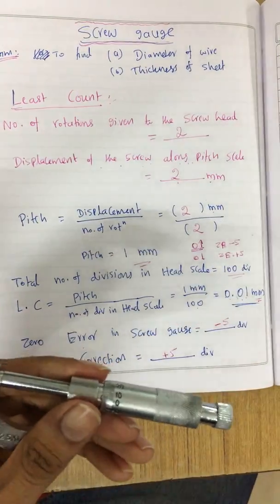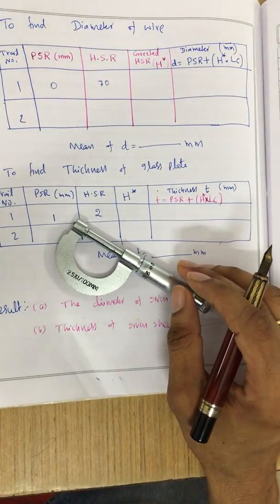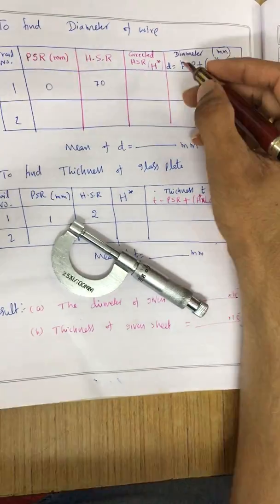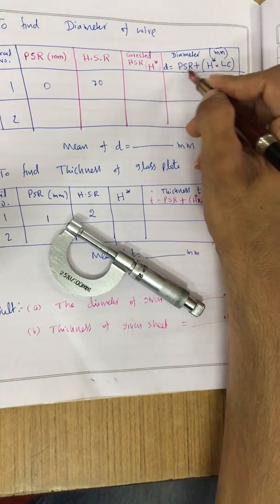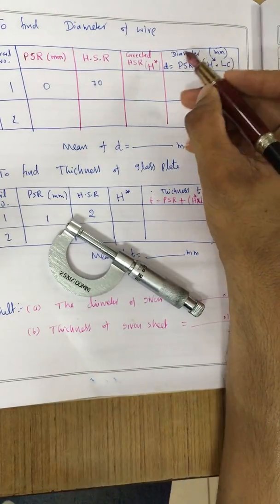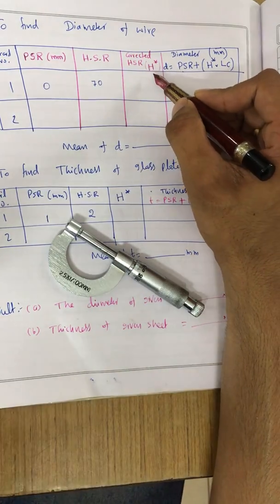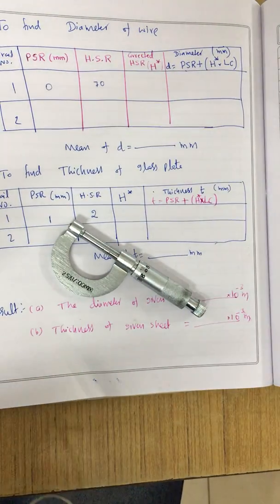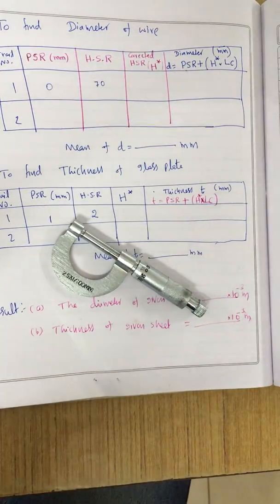Once we have found the zero error, we find PSR (pitch scale reading), HSR (head scale reading), and then corrected HSR. The formula is: total reading = PSR + (corrected HSR × least count). The HSR used here is the corrected HSR because we have some zero error.